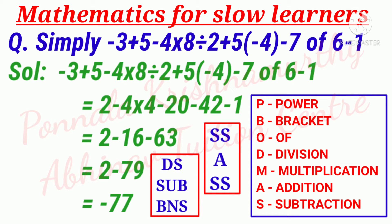Simplify: -3 + 5 - 4 × 8 ÷ 2 + 5 × (-4) - 7 of 6 - 1